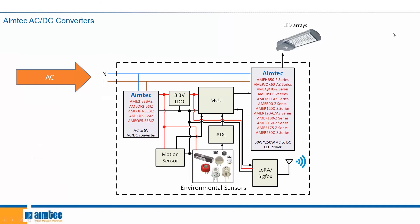Here we have an LED, so we're going to be using an AC-DC LED driver. AIMTECH has multiple LED drivers — in this example ranging from 50 watts all the way up to 250 watts depending on the power requirements of the LED itself. This takes AC in and then powers the LED. The next thing we have are AC to DC converters that convert AC coming in from the wall or any other AC power source to direct current, powering things like the motion sensor, the MCU, or the antenna. Depending on the power requirements of each component, we may need an output of 3 volts DC or 5 volts DC.